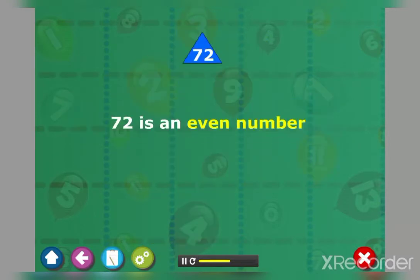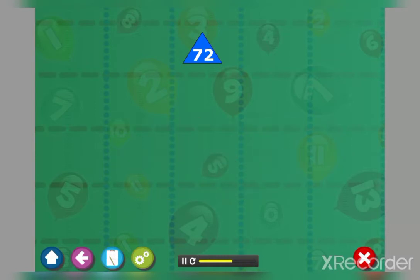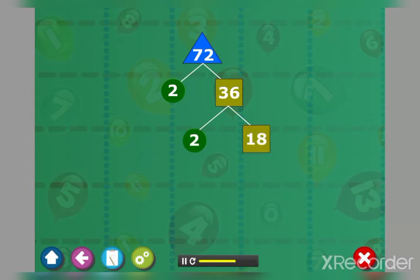Since 72 is an even number, its smallest factor is two. Two into 36 is equal to 72, so we draw the two branches of 72 as two and 36. 36 being a composite number can again be broken down into two and 18. We continue doing the same till we have broken down all composite numbers into their prime factors. Thus, the prime factors of 72 are all the leaves of the factor tree. Hence, the prime factorization of 72 is as follows.